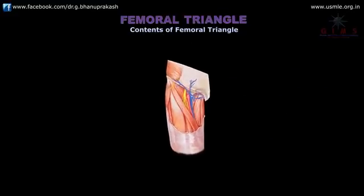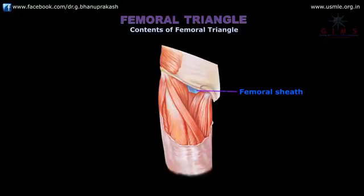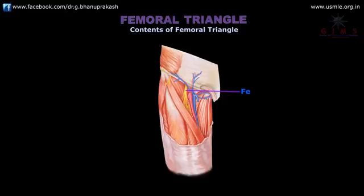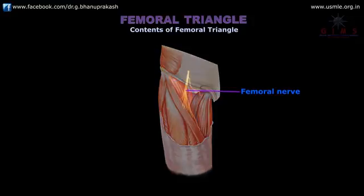The third content is the femoral sheath, which encloses the upper 4 centimeters of the femoral vessels. The fourth content is the nerves seen in the femoral triangle. The femoral nerve lies lateral to the femoral artery, that is outside the femoral sheath, and is exactly located in the groove between the iliacus and psoas major muscles.